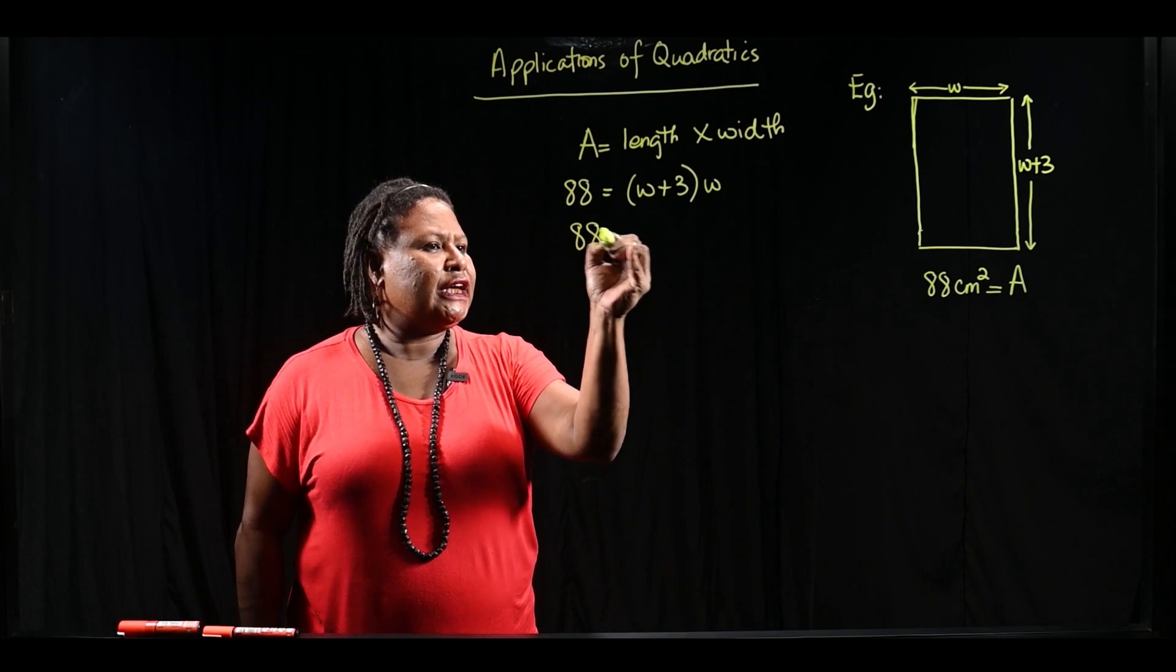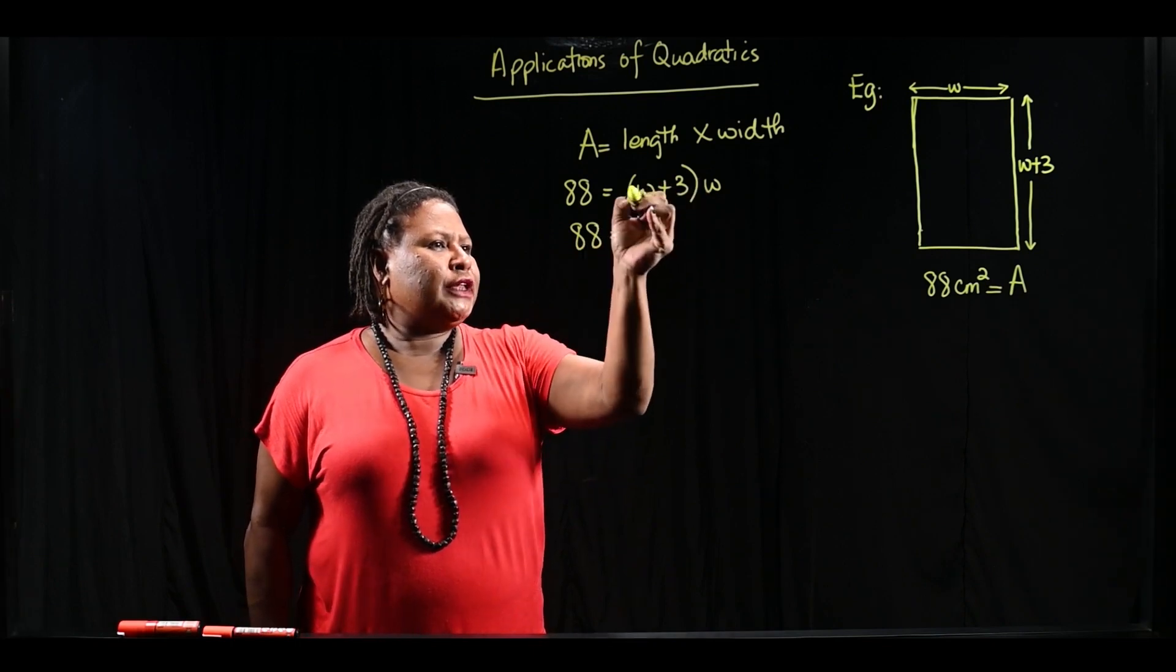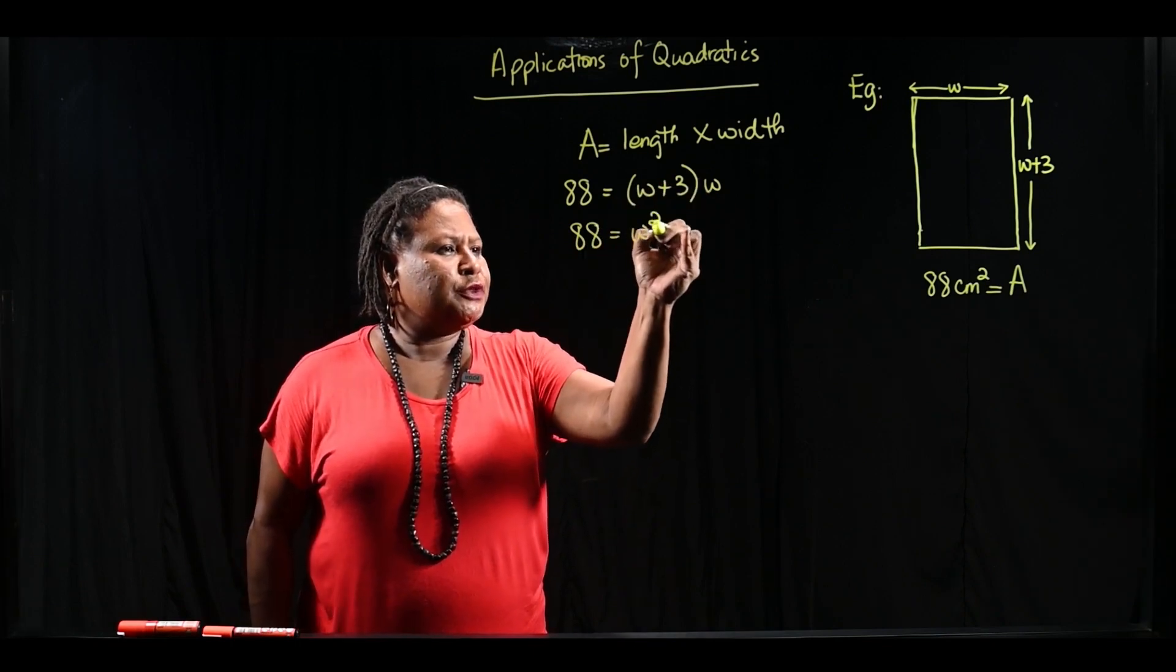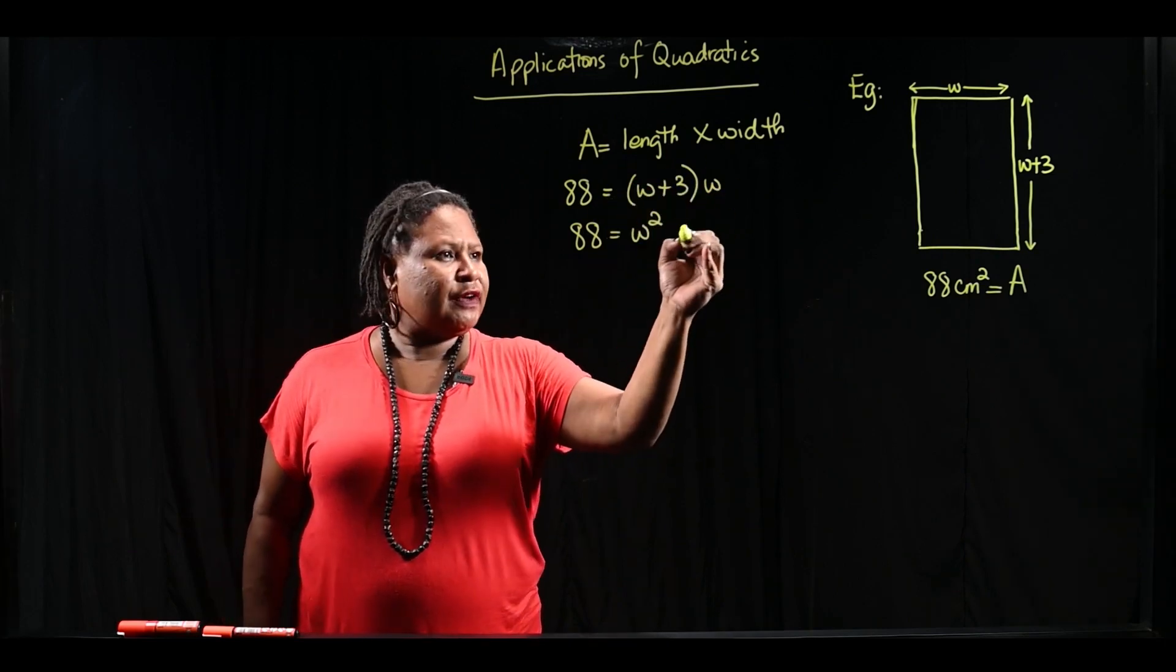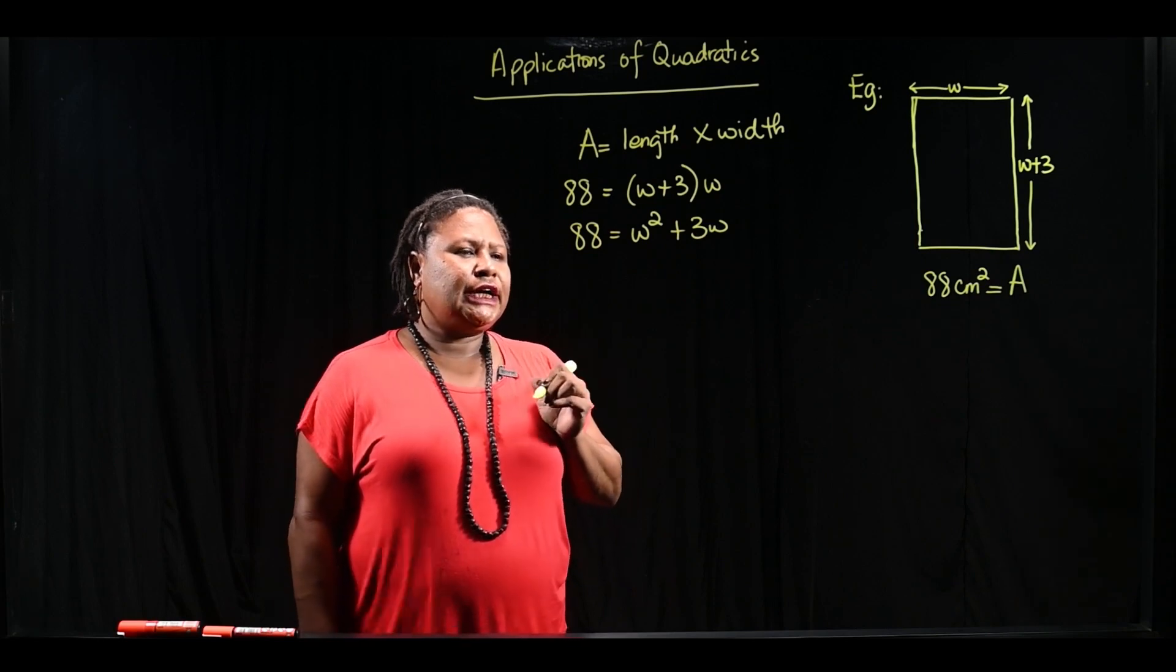So we have 88 equal to W times W, which is W squared. W times 3 will give us 3W.